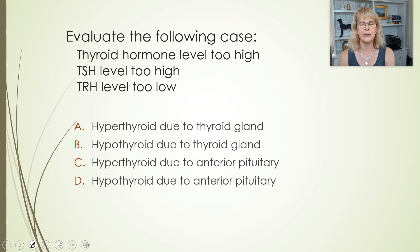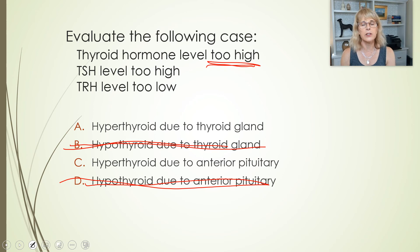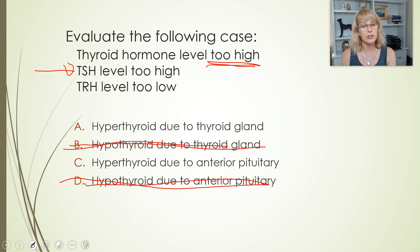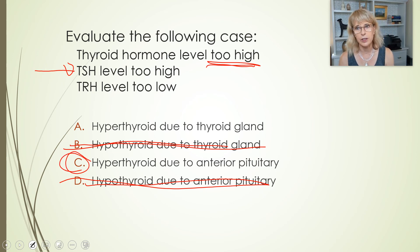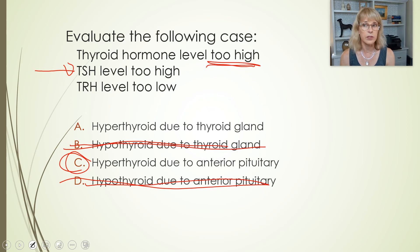Case four: thyroid hormone levels are too high — cross out the two hypothyroid answers. Is it the thyroid gland to blame or the anterior pituitary? The TSH levels are too high, meaning the manager is telling the employee to do it, so the fault lies with the anterior pituitary. In real life, we don't generally test hypothalamic hormones — that would be a specialty test. However, in every general practitioner's office, they'll be checking thyroid hormone levels and TSH, particularly for middle-aged women. Now you'll know how to interpret them.